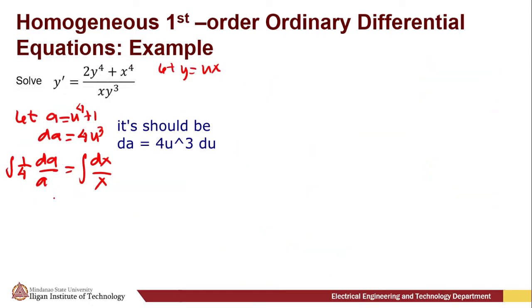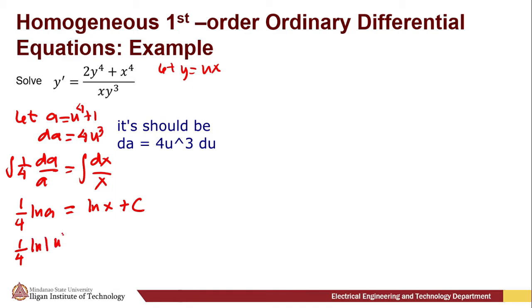Integrating both sides, we have (1/4) · ln(a) = ln(x) + C. Substituting back a = u⁴ + 1, we get (1/4) · ln(u⁴ + 1) = ln(x) + C.